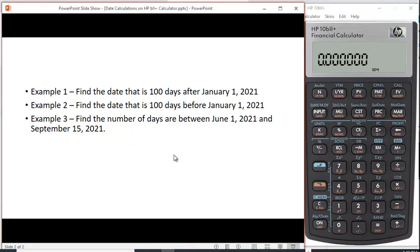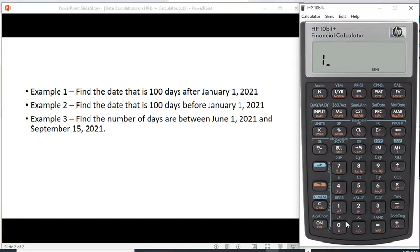Let's find the date that is 100 days from January 1, 2021. Here's how you have to put it in. You put in the month 1, then you hit the dot. Now it knows you're going to be putting in the day and the year. So you put in 01, 2021, and we're going to put in the date.